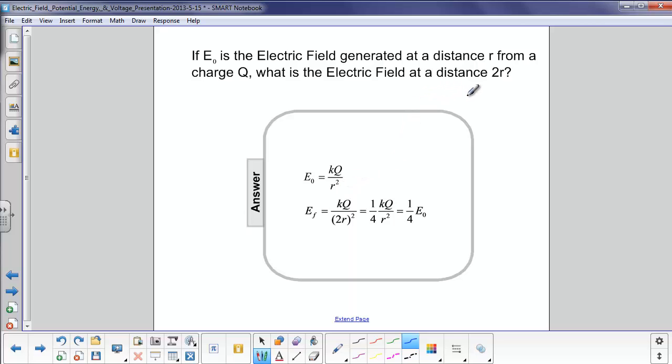Now, at E final, we're going to assume that's what the electric field is at this distance, 2r. So, we're going to find E final is kq over 2r, the quantity squared. Please be careful with these parentheses. You have to square the 2 and the r.